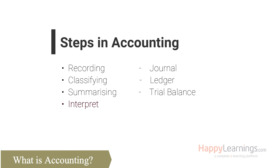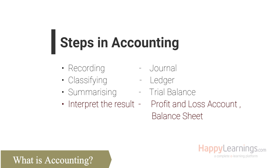And events which are in part at least of a financial character — and interpret the results thereof. That is the fourth step: interpreting. After recording, classifying, and summarizing, accounting gives us the result — net profit, assets, and liabilities.